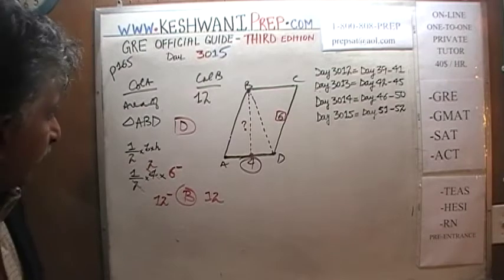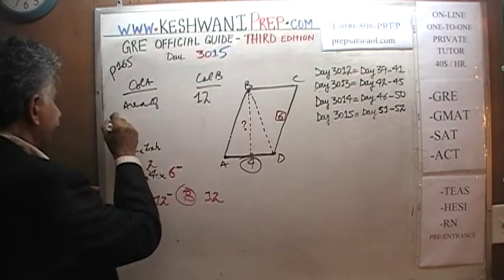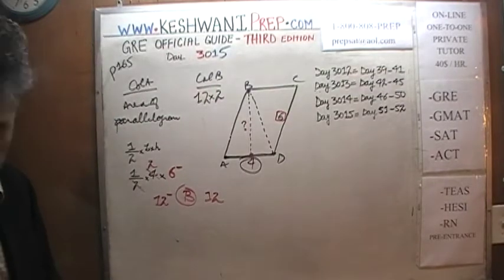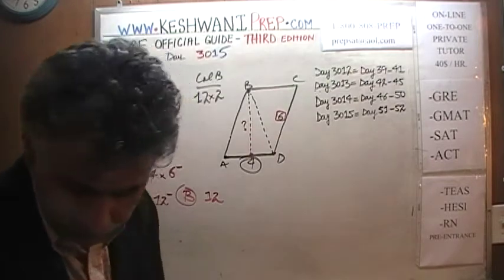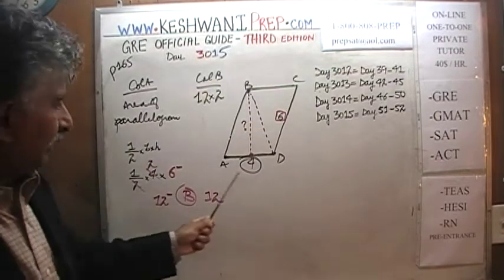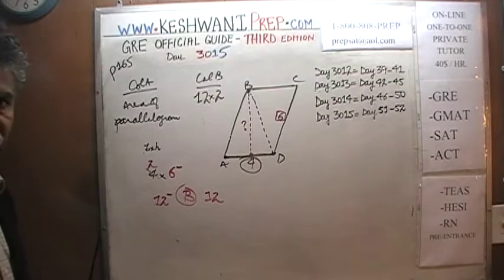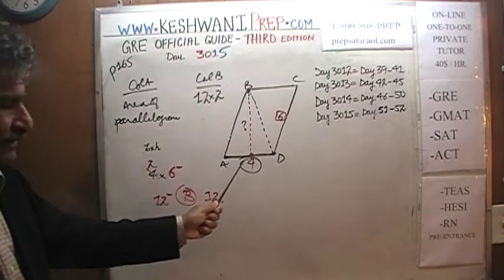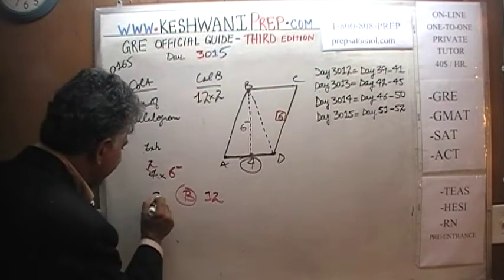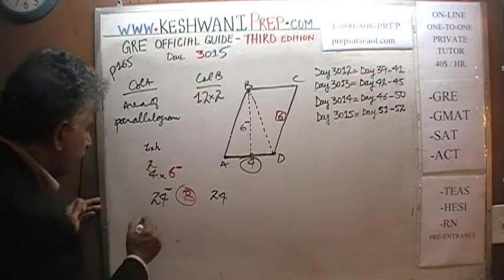That is how you solve problem 1. Now back to the original problem: area of the parallelogram versus 24. The area of the parallelogram is simply base times height — not one-half base times height. Base is 4, and the height, whatever it is, is less than 6. Therefore the area is less than 24, and we are comparing something less than 24 versus 24. The answer is B.